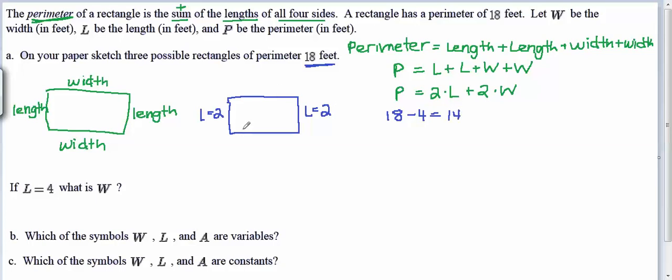Which means that when I add this width and this width, I'm going to need to get to 14. And then I could take that 14 divided by two, which tells me the width must be seven. So that would be one rectangle that would meet the criteria given.